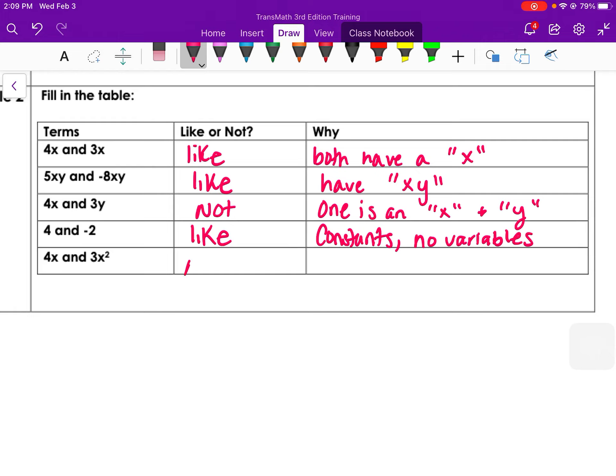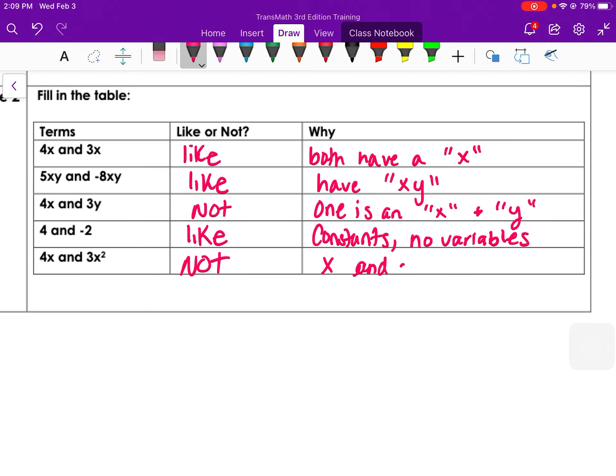And 4x and 3x squared are not alike. One is just x and the other is x to the second power or x squared. Those are not alike. One is x, one is x squared.